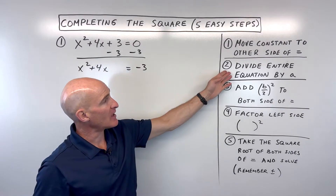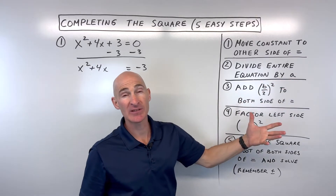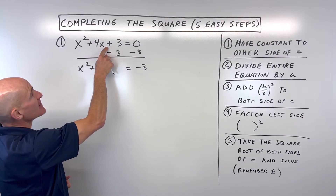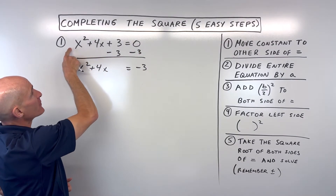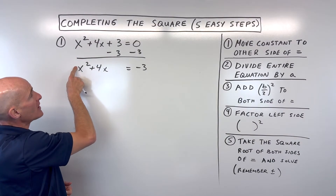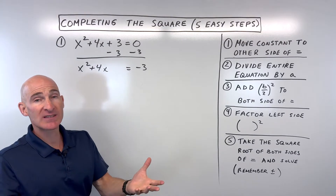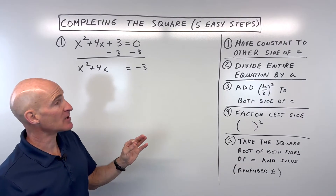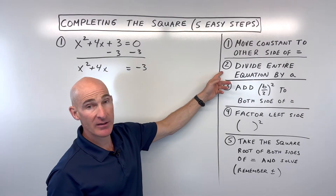Now the second step is you want to divide the entire equation by a. These equations are in the form ax squared plus bx plus c equals 0, so a is the number that comes in front of the x squared term. In this case there's just a 1 understood to be in front of the x squared term. We would divide everything by 1, but anything divided by 1 is itself, so in this particular problem it's really not an important step. You'll see how that plays out in the other examples.